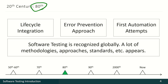Through the next decade it became obvious that software testing was no longer a standalone discipline, so the idea of lifecycle integration came to life. The idea was that the process of software development had to be combined with software testing, not just followed by it. The next idea was that it is much easier, cheaper, more effective and efficient to prevent mistakes and defects rather than to fix them later.